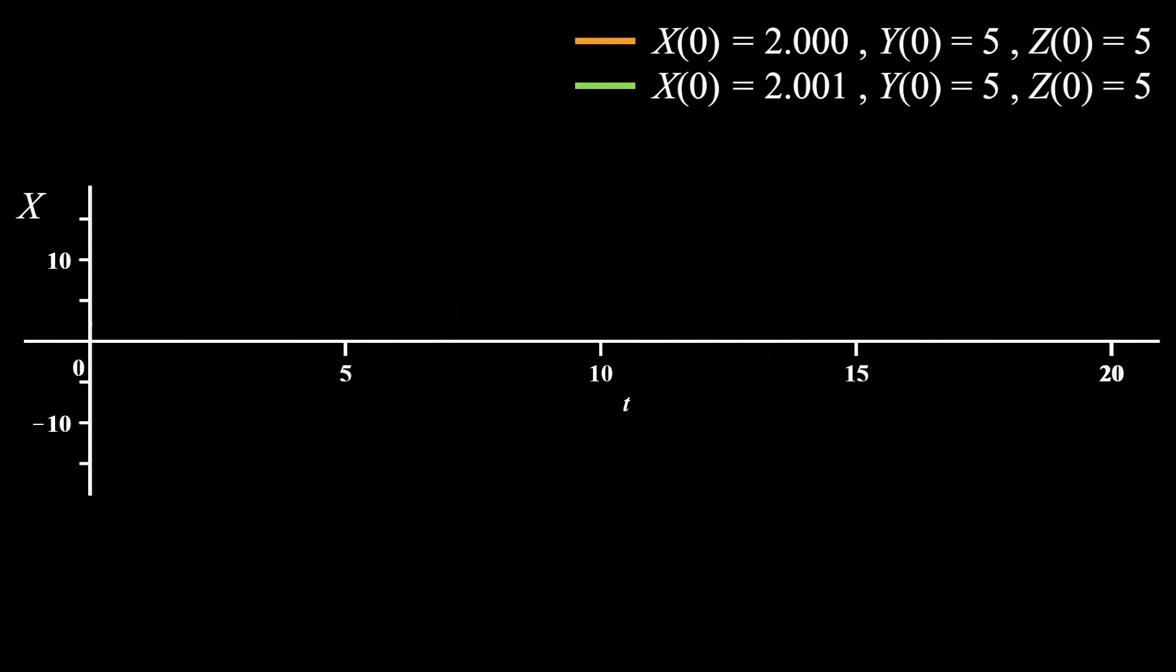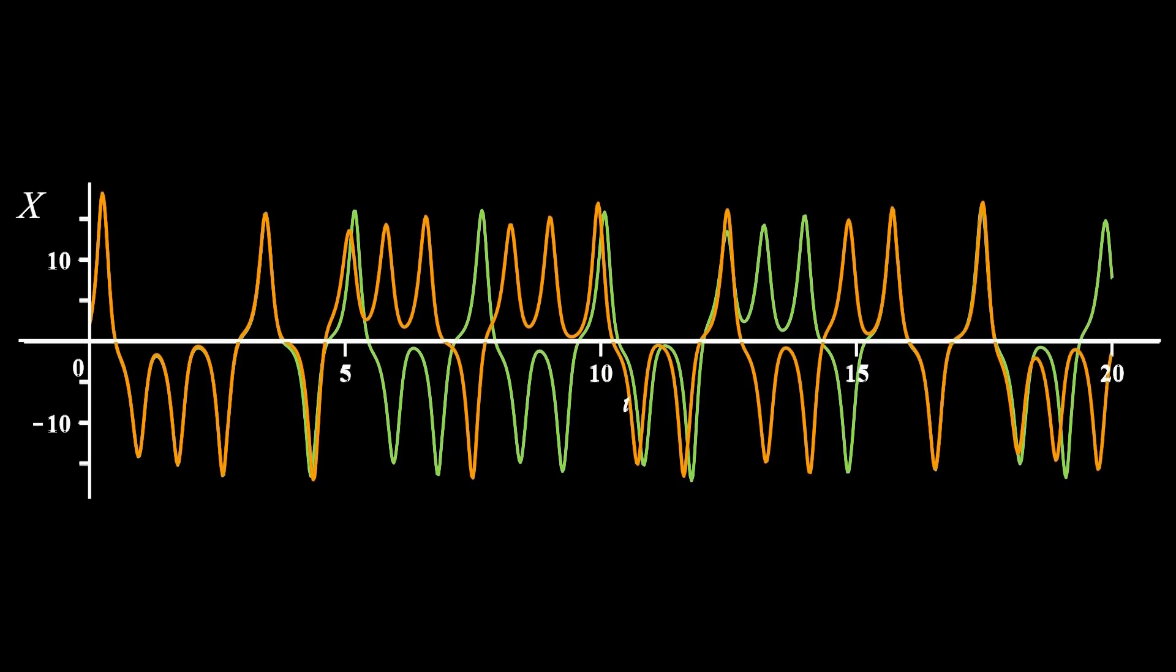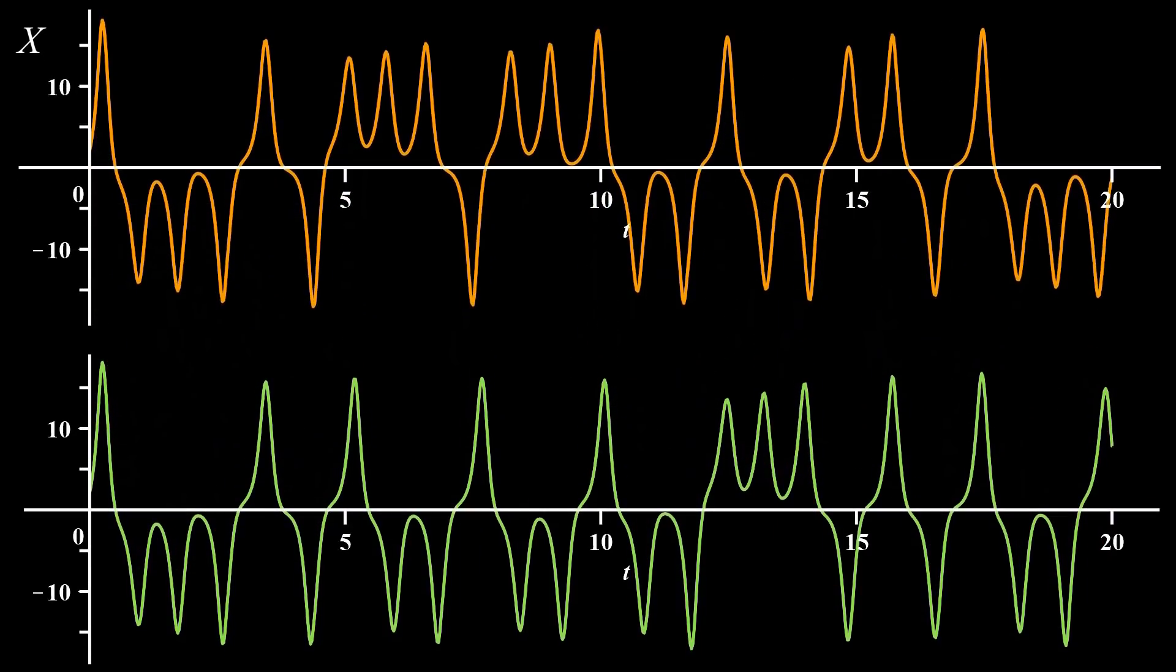Here you see again the curves I previously showed for two initial values that differ by a tiny amount. At first the two curves look pretty much identical, but then they diverge and after some time they become entirely uncorrelated. As you see, the curves flip back and forth between positive and negative values which correspond to the two wings of the attractor.